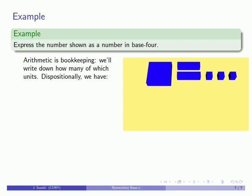So again arithmetic is bookkeeping and so we'll write down how many of which type of unit. And so dispositionally we might write down the amount that we have. We have one big thing. We have two of these medium sized blocks. And we have three of these small cubes left over.